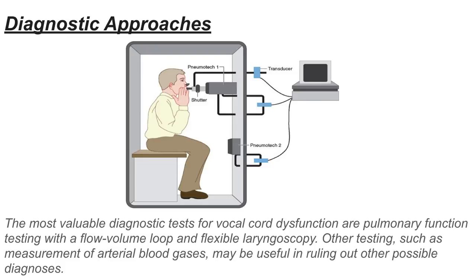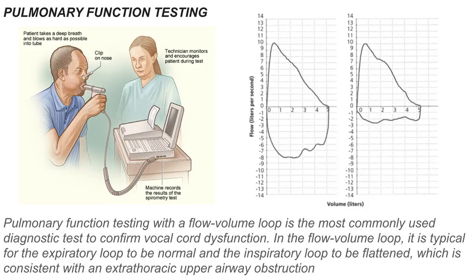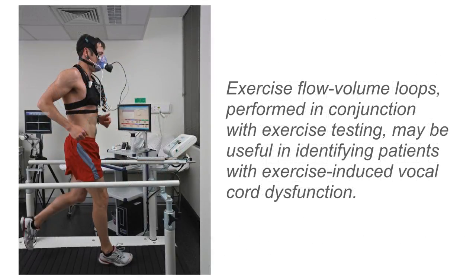What are the diagnostic approaches? The most valuable diagnostic tests for vocal cord dysfunction are pulmonary function testing with a flow volume loop and flexible laryngoscopy. Other testing, such as measurement of arterial blood gases, may be useful in ruling out other possible diagnoses. Pulmonary function testing with a flow volume loop is the most commonly used diagnostic test to confirm vocal cord dysfunction. In the flow volume loop, it is typical for the expiratory loop to be normal and the inspiratory loop to be flattened, which is consistent with an extra-thoracic upper airway obstruction. Exercise flow volume loops, performed in conjunction with exercise testing, may be useful in identifying patients with exercise-induced vocal cord dysfunction.